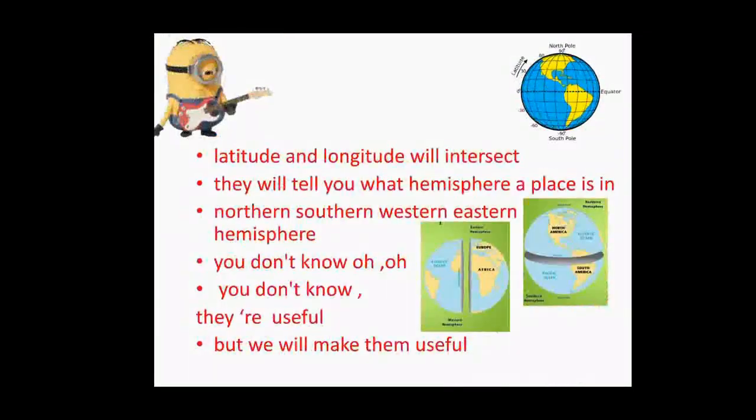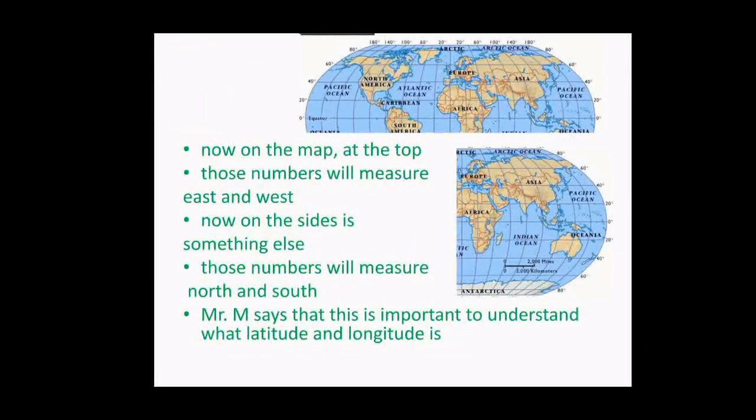Latitude, that is, equator divides the Earth into Northern and Southern Hemisphere. The same way, longitude, that is, prime meridian divides the Earth into Eastern and Western Hemisphere. These are all very useful to locate a place. Now, on the top of the map, those numbers measure East and West. On the sides, those numbers measure North and South are latitudes. So, it's very important for us to understand what latitude and longitude is.